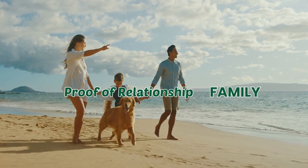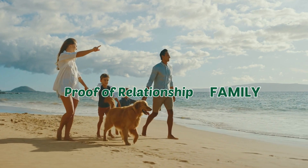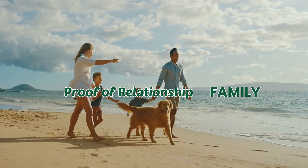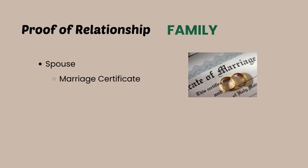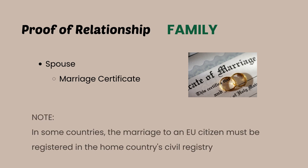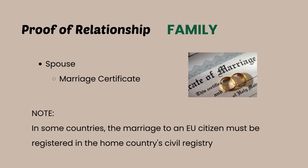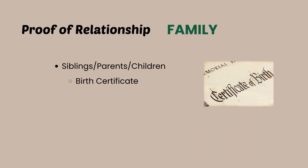Let's start with the documents needed for the proof of relationship for family members — I think this is one of those documentations that are easy to obtain. First off, if your sponsor or host will be your spouse, of course what is needed is the marriage certificate. Note that in some countries, especially with the Schengen visa, they require that the marriage to an EU national be registered in the home country's civil registry before they accept your marriage certificate. Next, if you'll be visiting your siblings, parents, or your children will be visiting you, then a copy of the birth certificate will be a good proof of your relationship.